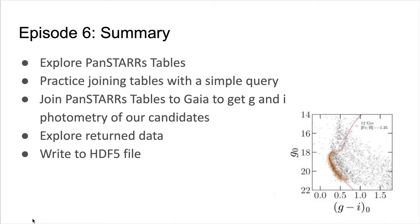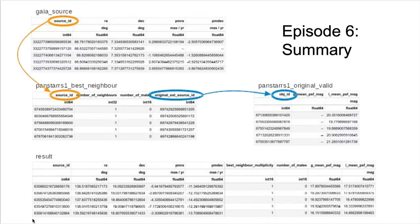Episode 6 is the culmination of our SQL lesson, having learners join three tables. Up until this point, we've been exclusively using the Gaia source table. In this episode, we will join to the PANSTARS1 best neighbor table, which links the Gaia source IDs to the PANSTARS IDs (the original ext source ID column). This table is then joined to the PANSTARS1 original valid table, which gives G, R, I, Z, and Y-band photometry for each original ext source ID. The original ext source ID column in the PANSTARS1 best neighbor table is matched to the OBJ ID in the PANSTARS1 original valid table. In this way, we get PANSTARS photometry and Gaia location and proper motion information for every source in our current GD1 catalog.